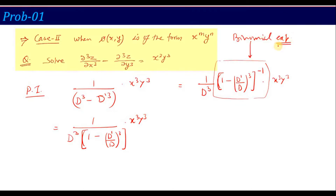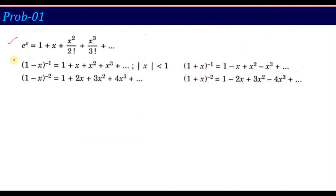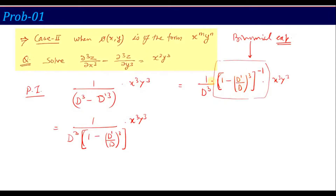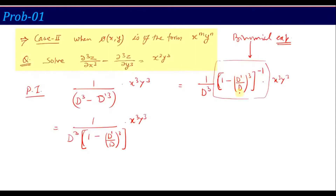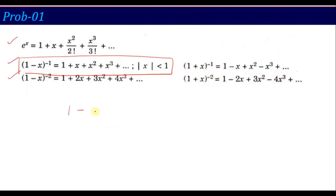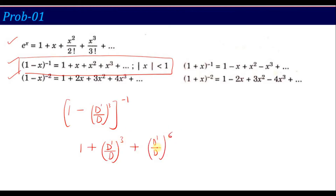Using the binomial expansion formula (1−x)^(−1) = 1 + x + x² + ..., where x = (D'/D)³, the expansion gives: 1 + (D'/D)³ + (D'/D)⁶ + (D'/D)^9 + ... However, we only expand as far as needed based on the right hand side function x³y³. Since D' means ∂/∂y, differentiating y³ three times gives a constant (6), and differentiating further gives zero. So terms beyond D'³ will produce zero.